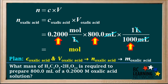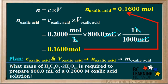So we go 0.2 times 800 divided by 1000, which gives us 0.1600 moles. Notice that none of our data contains any less than 4 significant figures, so we expressed the 0.16 to 4 significant figures. And we'll make a note that the moles of oxalic acid dihydrate required is 0.1600 moles.